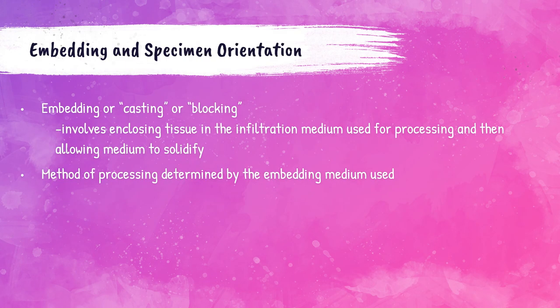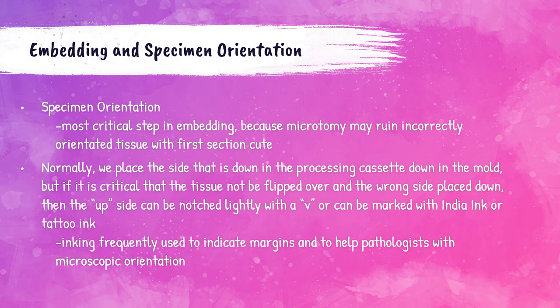Embedding — also called casting or blocking — describes surrounding the tissue in the infiltration medium and allowing that medium to become solid. The way the specimen is oriented within the embedding medium is the most crucial part of the embedding process. Improper orientation of tissue may ruin it during microtomy, which is when tissue is cut into thin sections for examination under a microscope using a microtome.